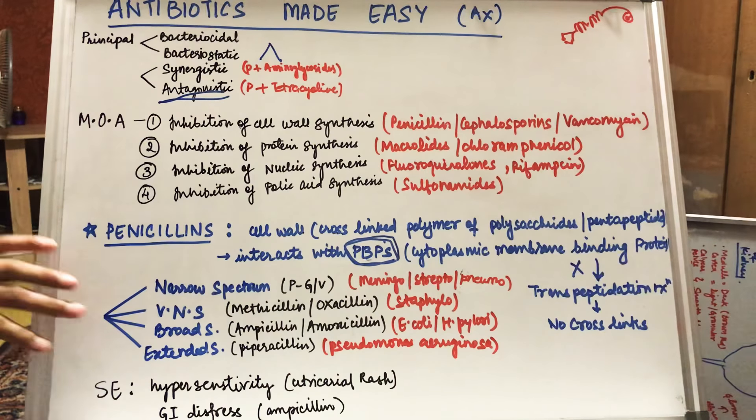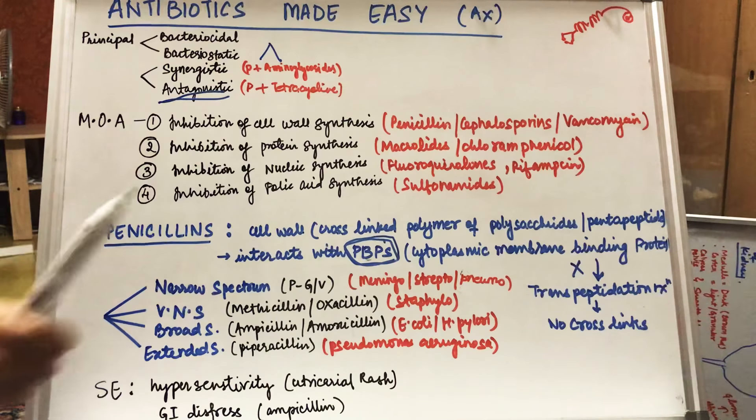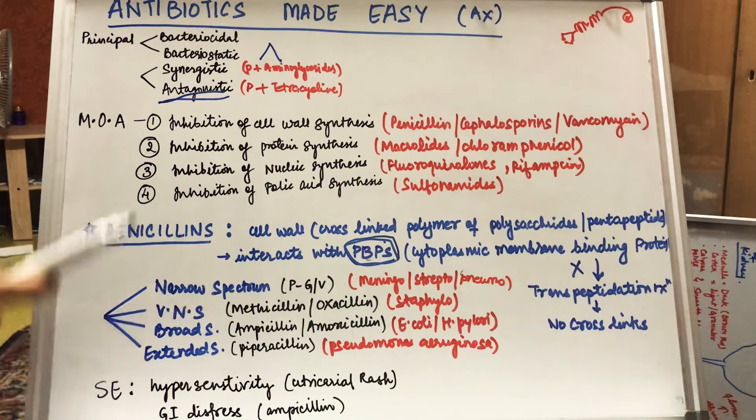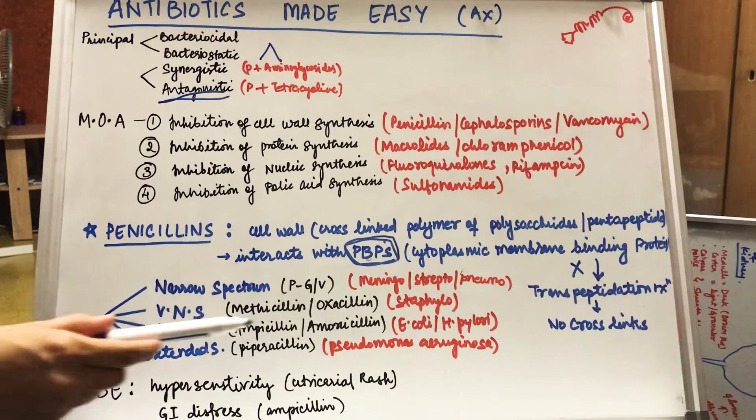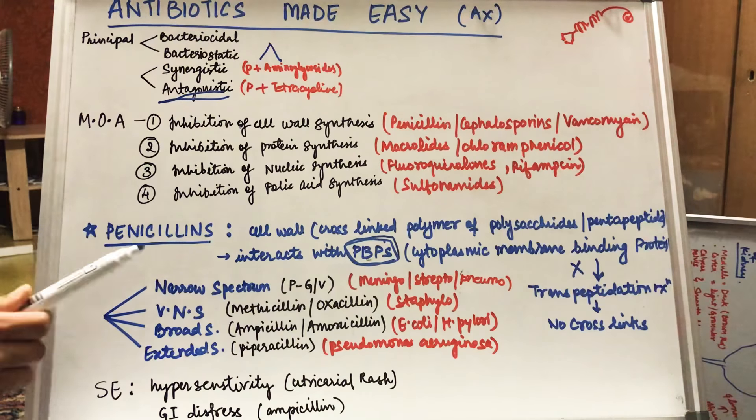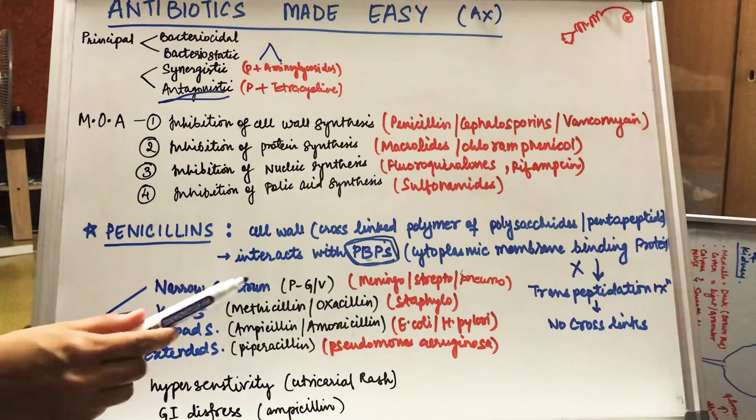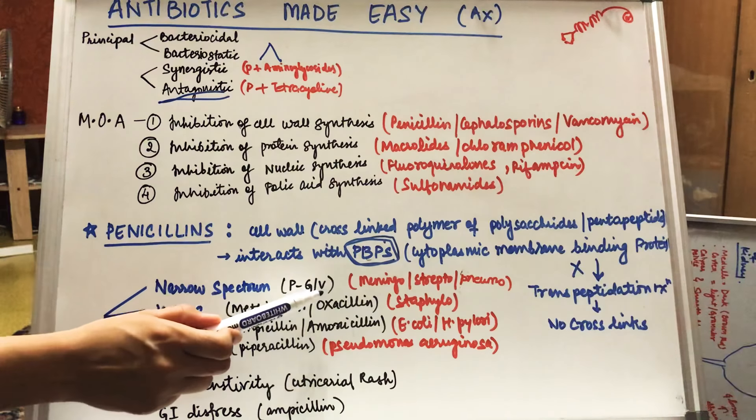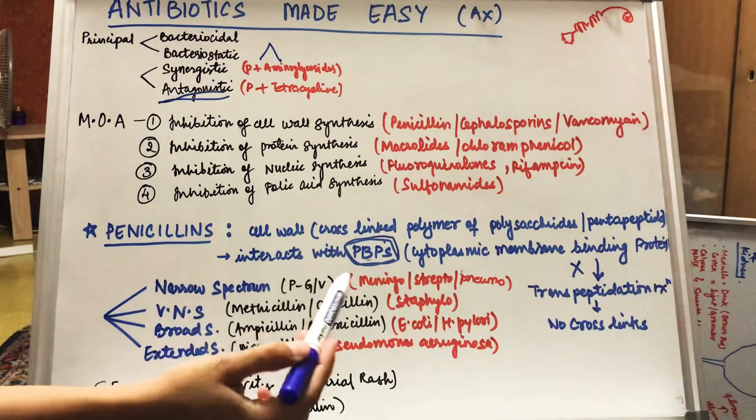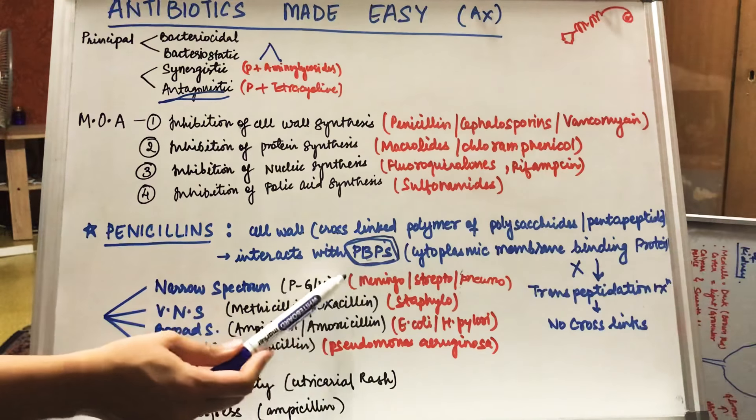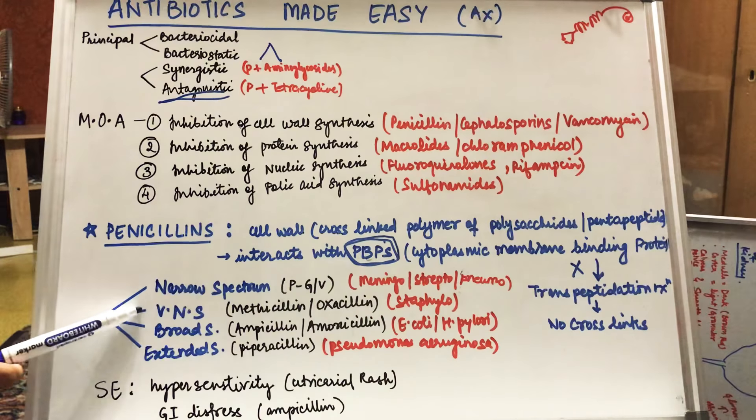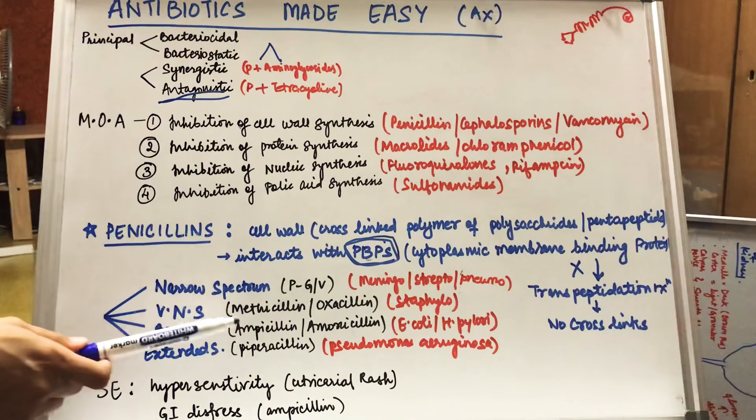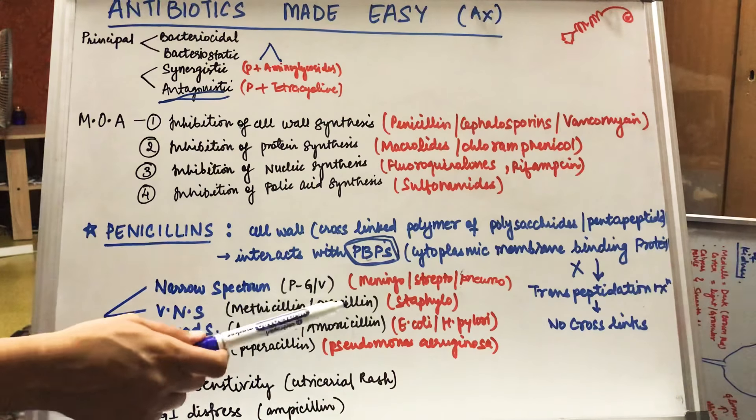We can classify penicillin into four types: narrow spectrum penicillins, very narrow spectrum, broad spectrum, and extended spectrum. You need to remember the names and the organisms they work against. In narrow spectrum, examples are penicillin G and penicillin V. It works against organisms such as meningococcus, streptococcus, and pneumococcus.